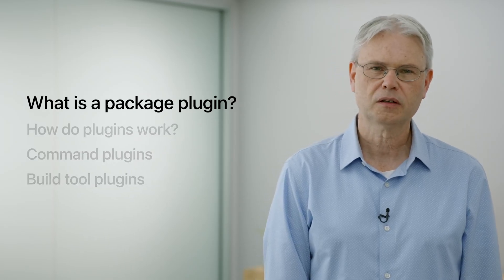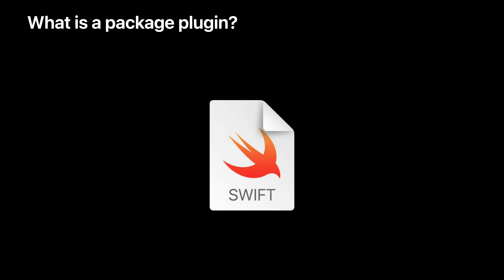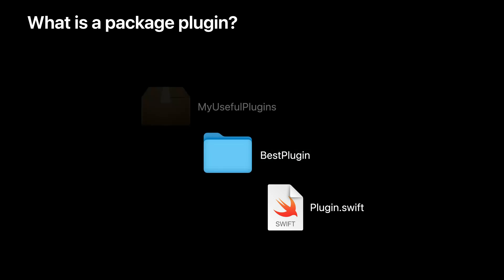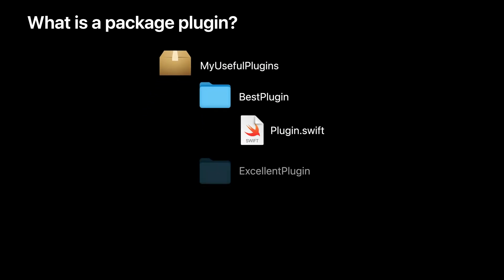So first of all, what is a plugin? A package plugin is a Swift script that can perform actions on a Swift package or an Xcode project. A plugin uses API that Xcode provides especially for this purpose. Package plugins are implemented as Swift packages. A package can provide plugins together with libraries and executables, or a package could focus only on providing plugins. A package plugin can be implemented using more than one source file, and a Swift package can define more than one plugin.